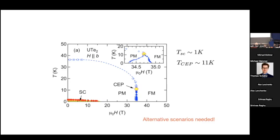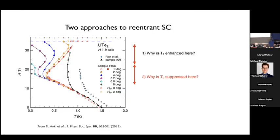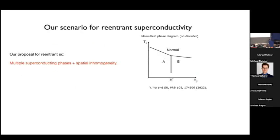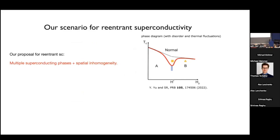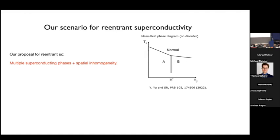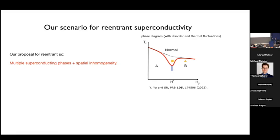We looked for an alternate mechanism using the more pessimistic approach: why is Tc suppressed? In simple phenomenology we suppose that as a function of magnetic field there are two distinct superconducting phases, A and B. Landau tells you that because they have different symmetries there would be a first-order transition between them, but that first-order transition terminates at a bicritical point. At the bicritical point, thermal fluctuations and quench disorder effects can reduce Tc in the vicinity — you have mean-field-like transitions into phases A and B separately, but near the first-order transition between them there are enhanced fluctuations.